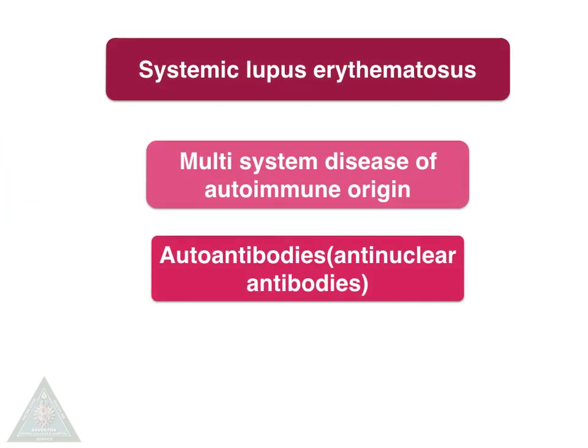Systemic lupus erythematosus is a multi-system disease of autoimmune origin, described as an acute or insidious onset disease. It is a chronic, remitting and relapsing, often febrile illness, characterized principally by injury to the skin, joints, kidney, and serosal membranes.